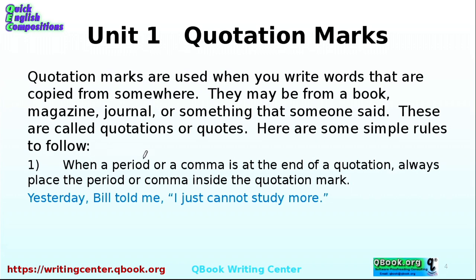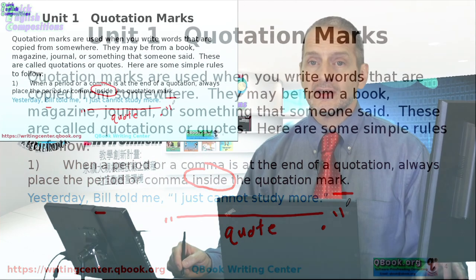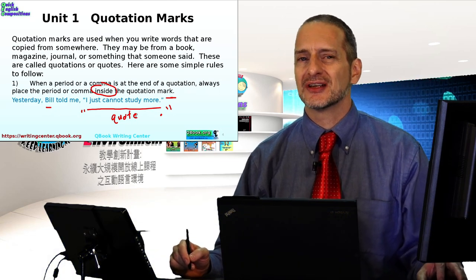Rule number one: when a period or comma is at the end of a quotation, always place the period or comma inside the quotation mark. For example: "Yesterday, Bill told me, 'I just cannot study more.'" Bill said this, so it's a quote inside quotation marks, and importantly the period goes inside. Pay attention to spacing: no space before the quotation mark, no space after the closing quotation mark before the period. Even native speakers get confused about how this works.